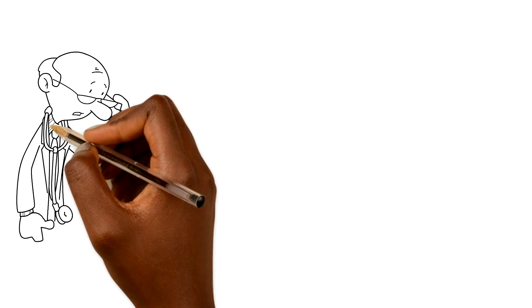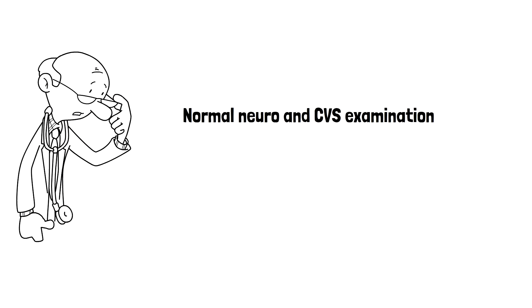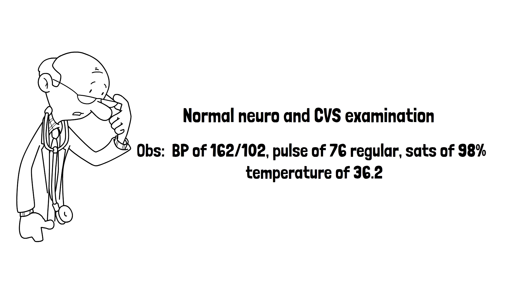You examine her in clinic today and she has a normal neurological and cardiovascular examination. Her observations reveal an elevated blood pressure of 162 systolic over 102, a pulse of 76, saturations of 98%, and a normal temperature of 36.2. She presents to you for help to treat her acute attacks of migraines.